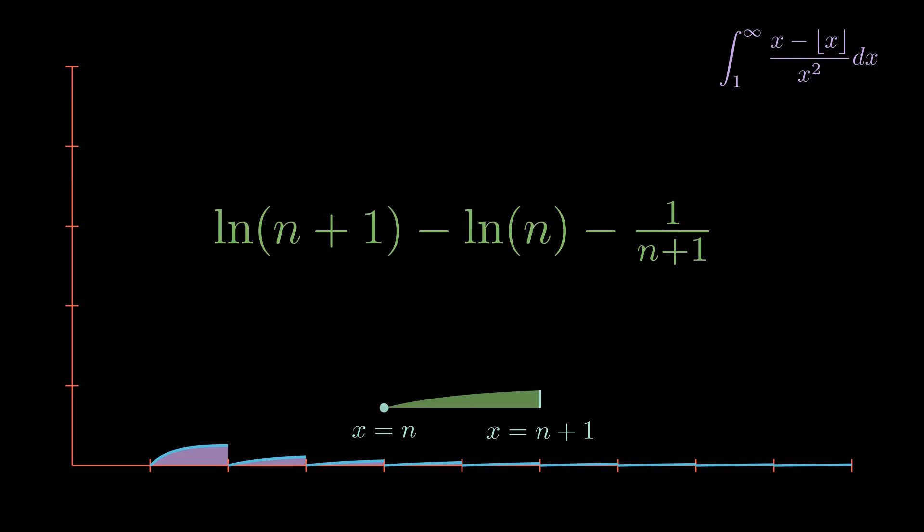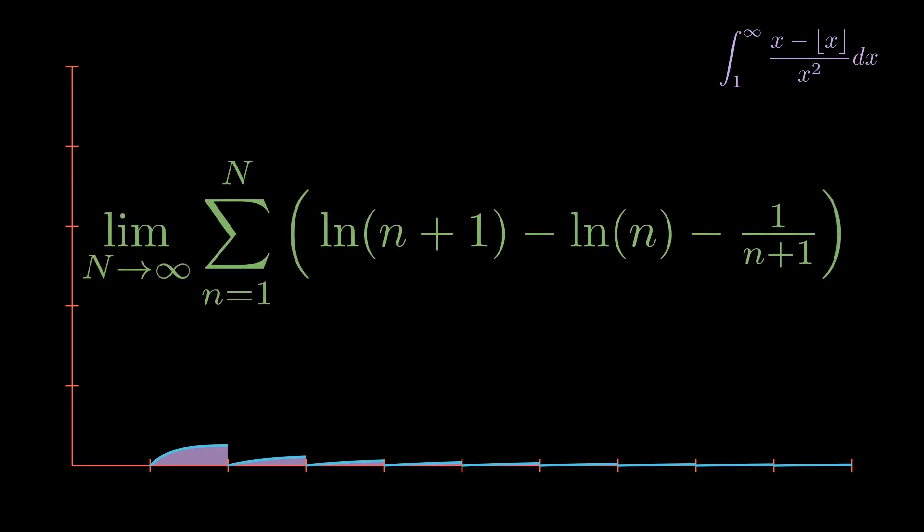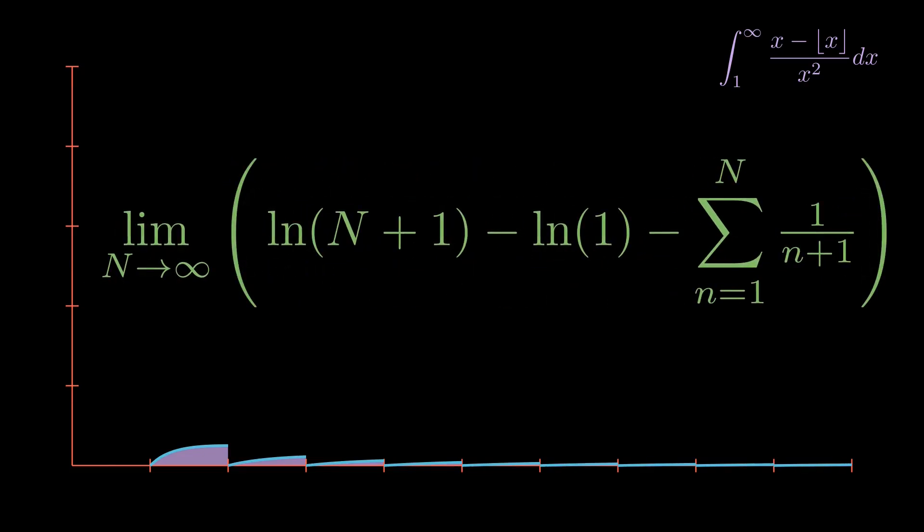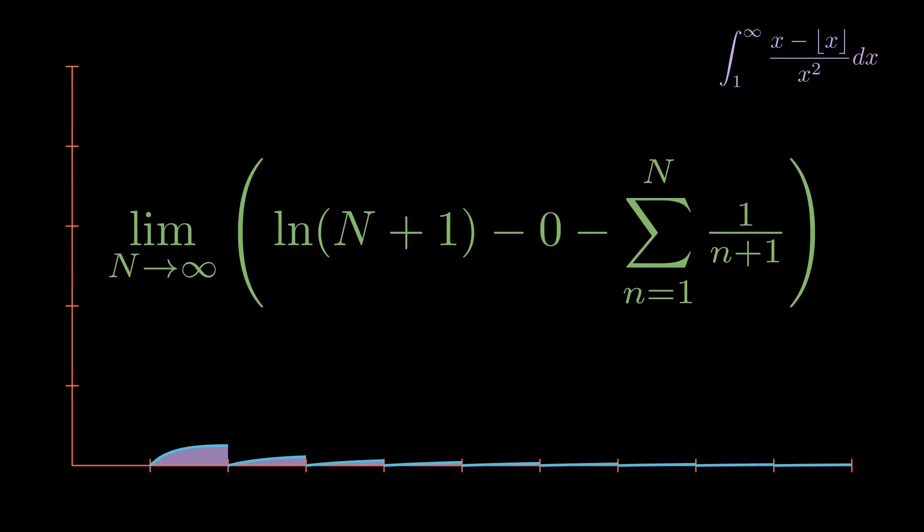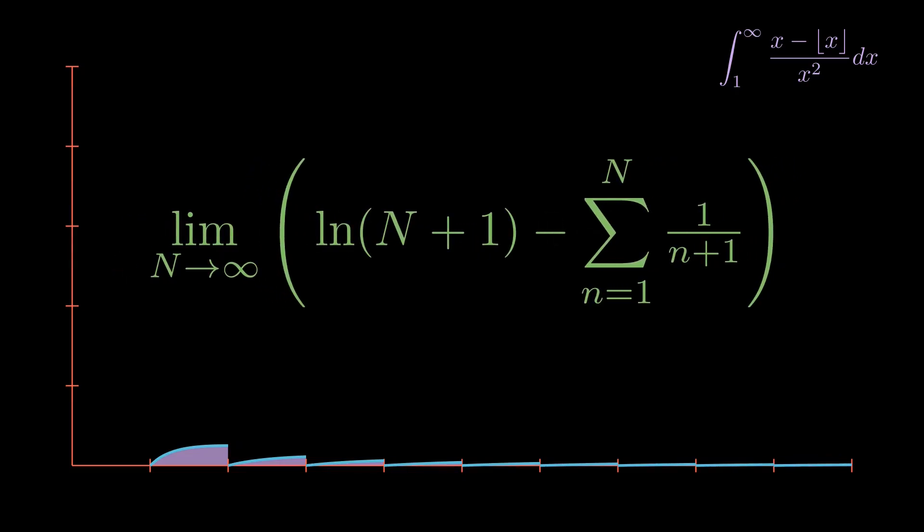Now that we have a general form for any given area under this function, we can find the sum. The beautiful thing about the natural log section of this sum is that it's a telescoping series, meaning the only terms we care about are the first and last. Since the natural log of 1 is 0, that goes away. For more information about telescoping series, I recommend watching the previous video.